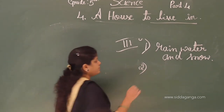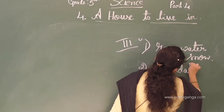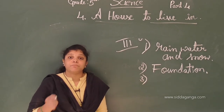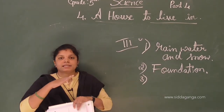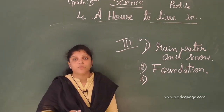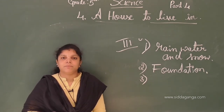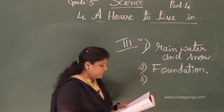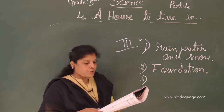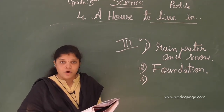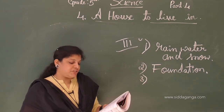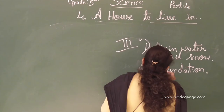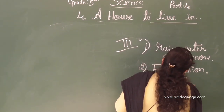Second fill in the blank: the blank is the most important factor in the construction of a house because the whole house stands over it. The answer is foundation. The foundation is very important. The whole house stands on the foundation. If it is a weak foundation, a weak house will be built. If it is a strong foundation, we can build a strong house with many floors. Third: the house should have a good blank system to carry away waste water — drainage system.